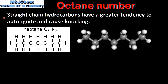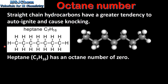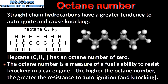Straight chain hydrocarbons have a greater tendency to auto ignite and cause knocking. Here we have an example of a straight chain hydrocarbon which is heptane. Because heptane has a high tendency to auto ignite and cause knocking, it's assigned an octane number of zero. The octane number is a measure of a fuel's ability to resist knocking in a car engine. The higher the octane number, the greater the resistance to auto ignition and knocking.